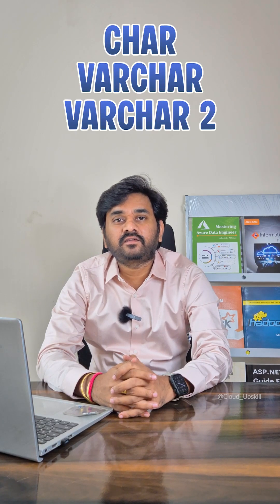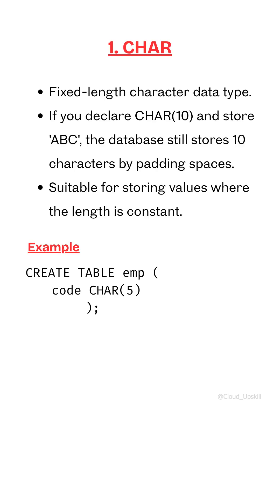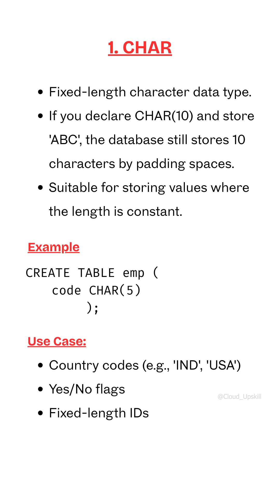The question is the difference between CHAR, VARCHAR, and VARCHAR2. CHAR is a fixed-length data type — if you declare a CHAR of length 10 and store 'abc', the database stores it with 10 characters using padding spaces. It is suitable for values of constant length; the best use cases are flags, serial numbers, or country codes.